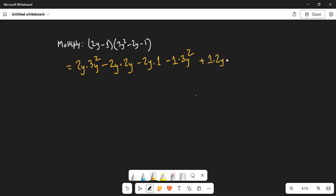So let's simplify now. 2 times 3 is 6, y times y squared—the exponents are added—so y times y squared is y cubed.